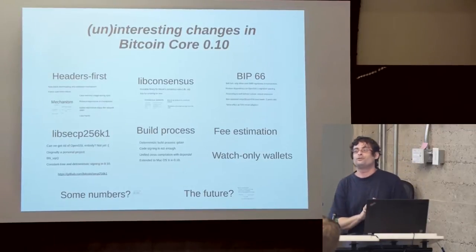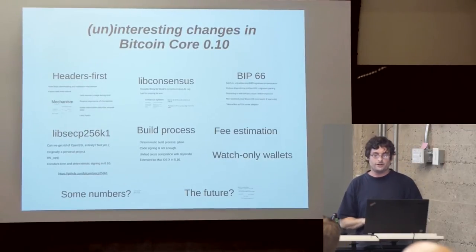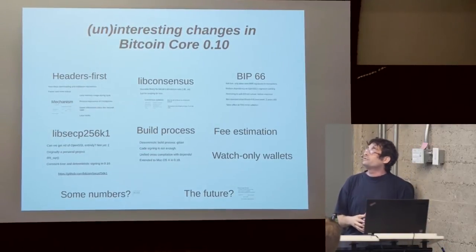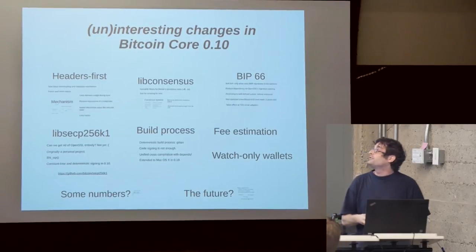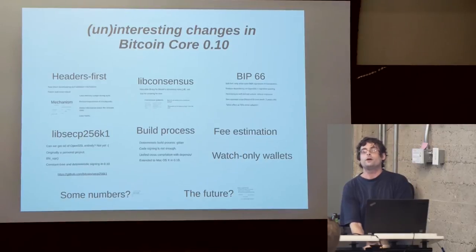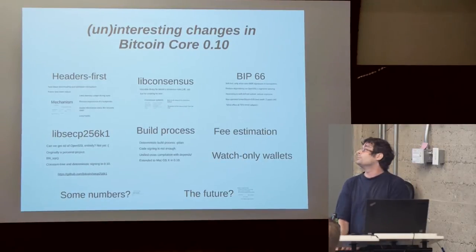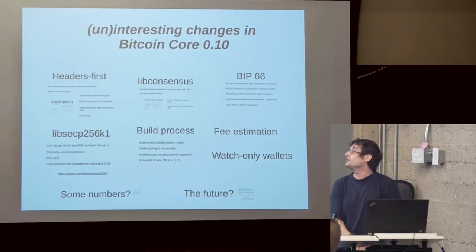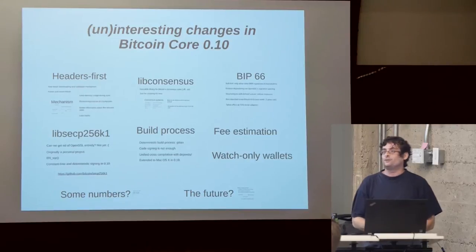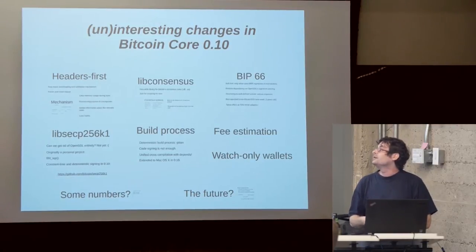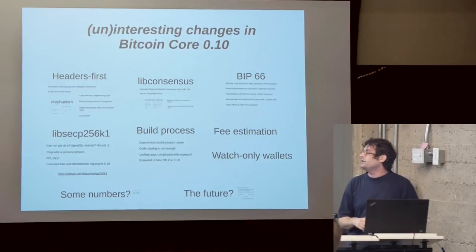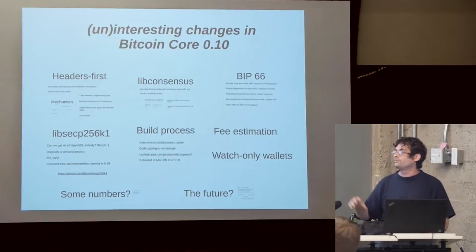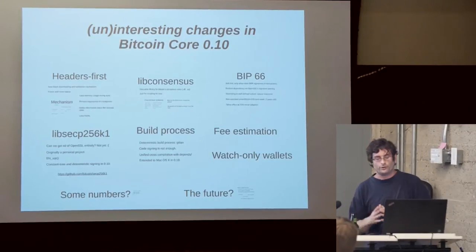Here's a short overview of the things I'm going to talk about: the headers-first synchronization mechanism that will be in 0.10, the new libconsensus library, the BIP66 soft fork which will require strict DER signatures, a new library we're using for elliptic curves called libsecp256k1, some things about the build process, fee estimation, watch-only wallets, and then I'll talk some numbers and give a prospect for the future.